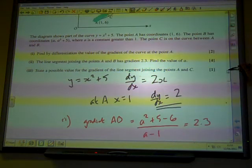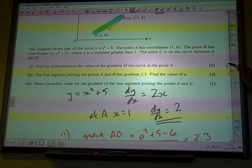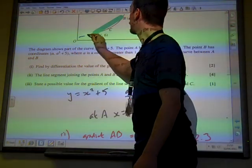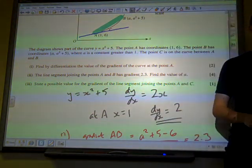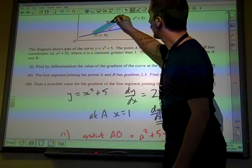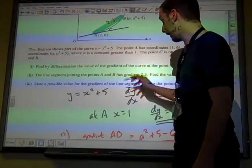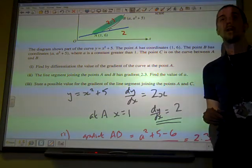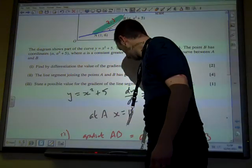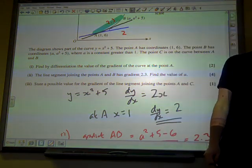Part (iii): State a possible value for the gradient of the line segment joining points A and C. Let's think about what we've learned from this. We've learned that that gradient there of that strangely thick line is 2.3, because that's what the question said. We've learned that the gradient there of the line at A is 2. What can you tell me about the gradient of the line that goes from A to C?